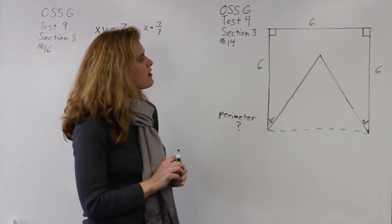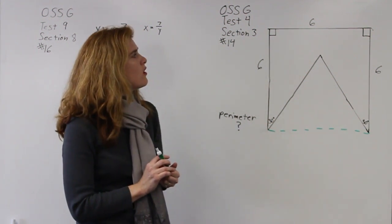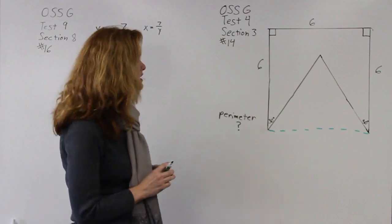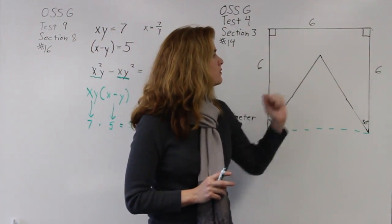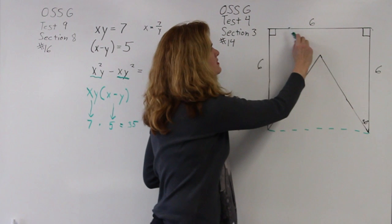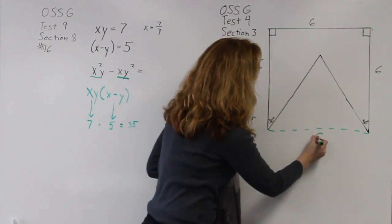So now I'm going to think about some things that I know in geometry. I know that in a square opposite sides are equal, so I know that because this side is six, this side is also going to be six.